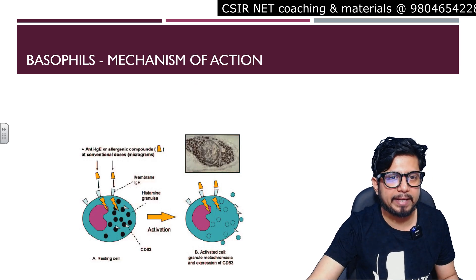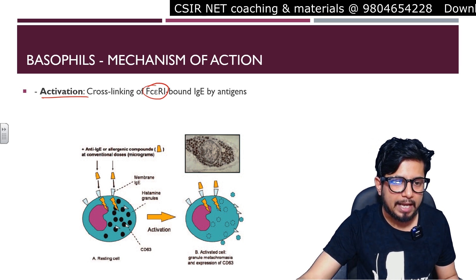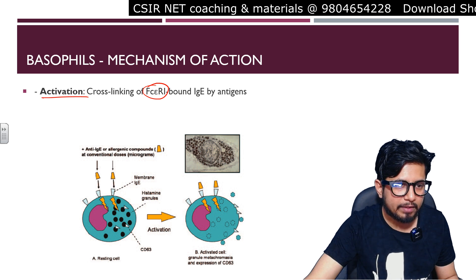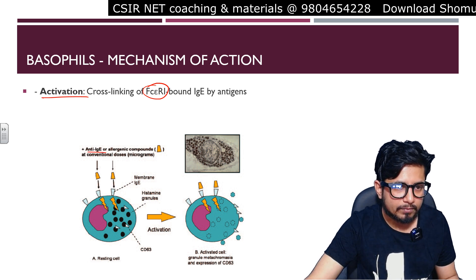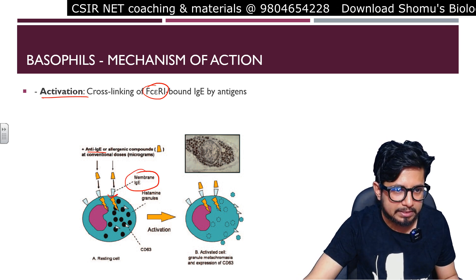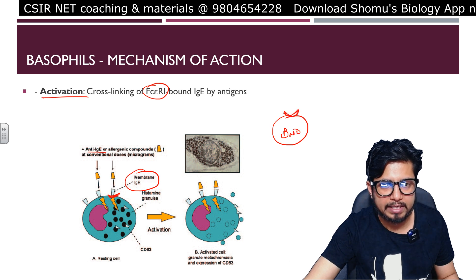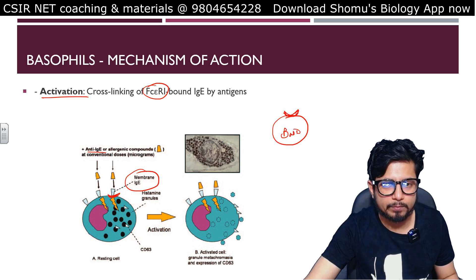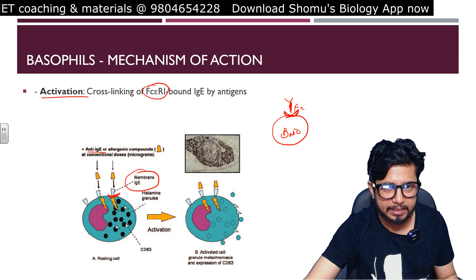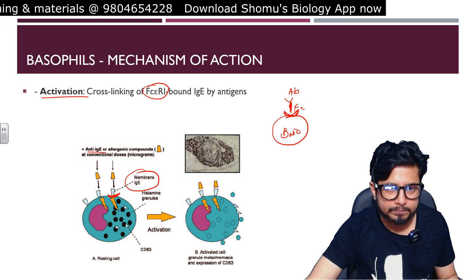The mechanism of action involves the cross-linking of the Fc epsilon receptor. The basophil surface has IgE receptors where the antibody binds via its Fc region. When an allergenic compound is present, it binds to the membrane-bound IgE already on the basophil surface, triggering activation.